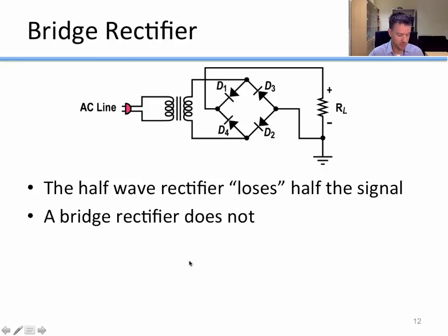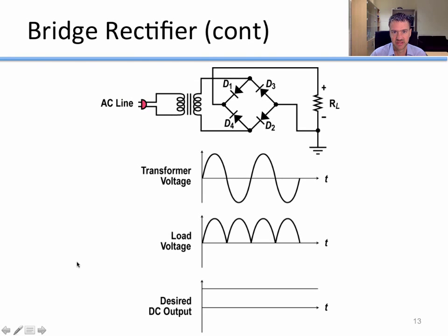How can we get rid of that zero portion where we lose the negative voltage entirely? We'll use what's called a bridge rectifier or a full wave rectifier. A bridge rectifier does not lose that half of the signal. Instead, we have a transformer voltage, and when it's positive, it passes through the diodes. When it's negative, the circuit reverses it so it still passes through.